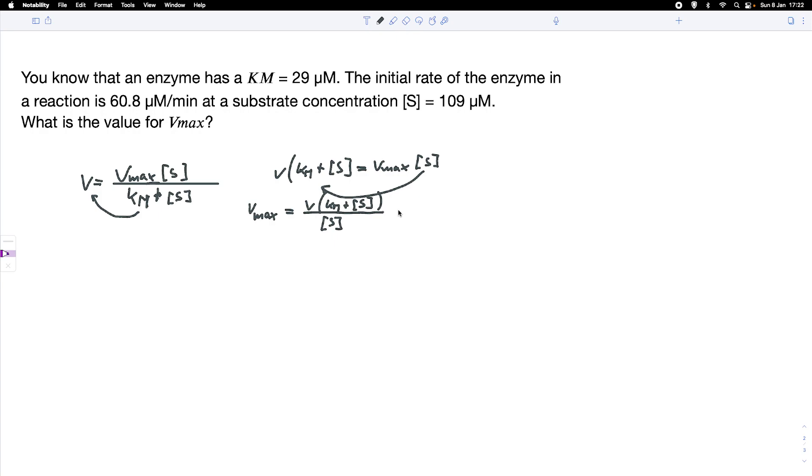All we need to do now is put in numbers. Our initial rate was 60.8, times Km which was 29, plus our substrate concentration 109, divided by our substrate concentration 109.